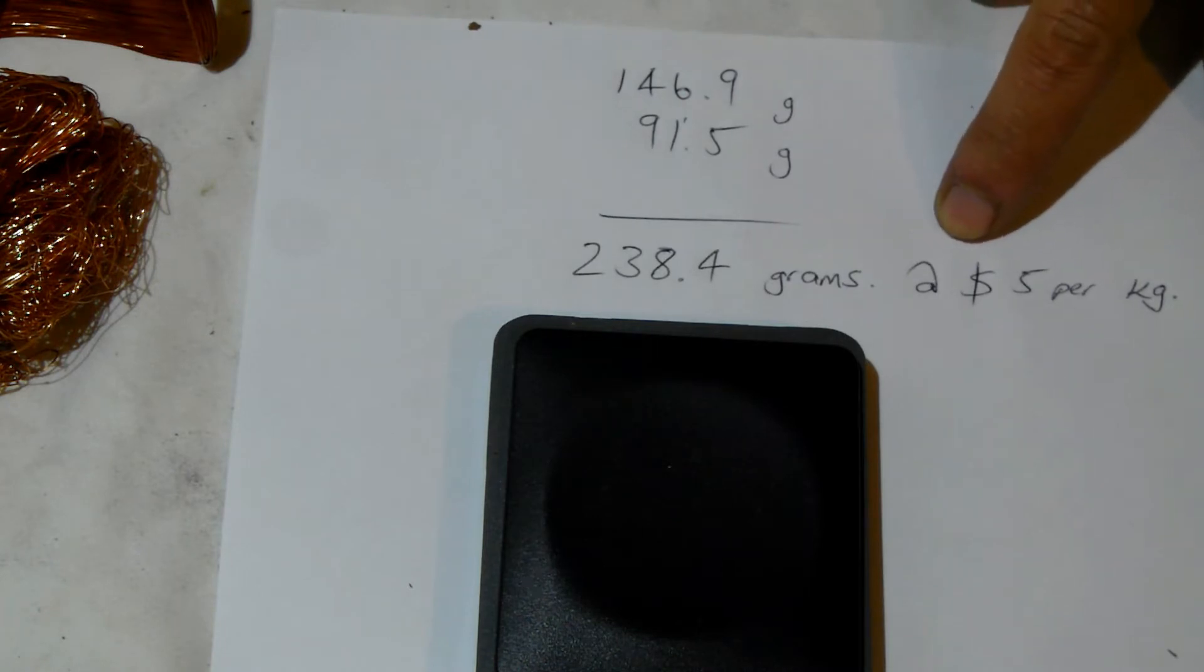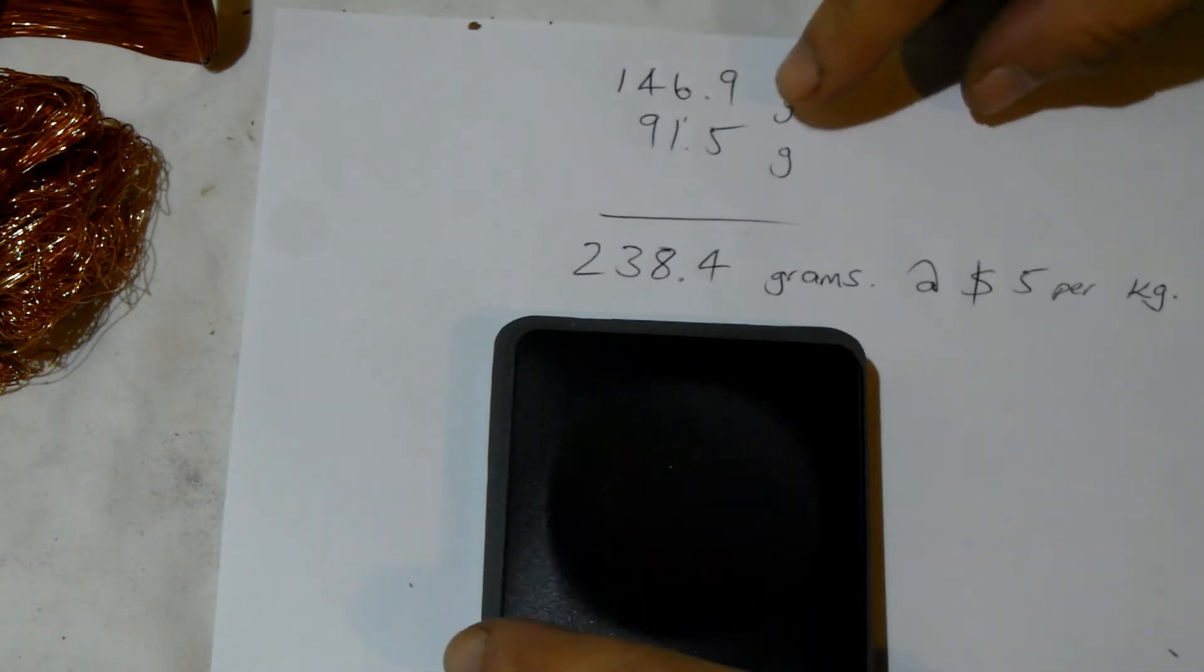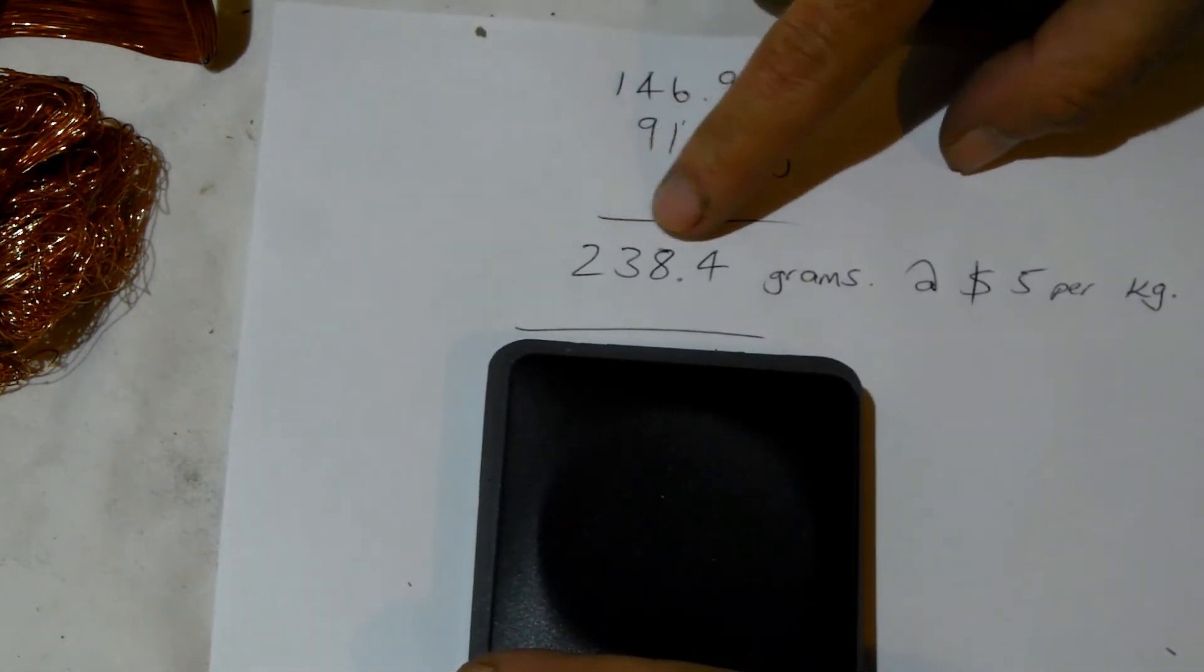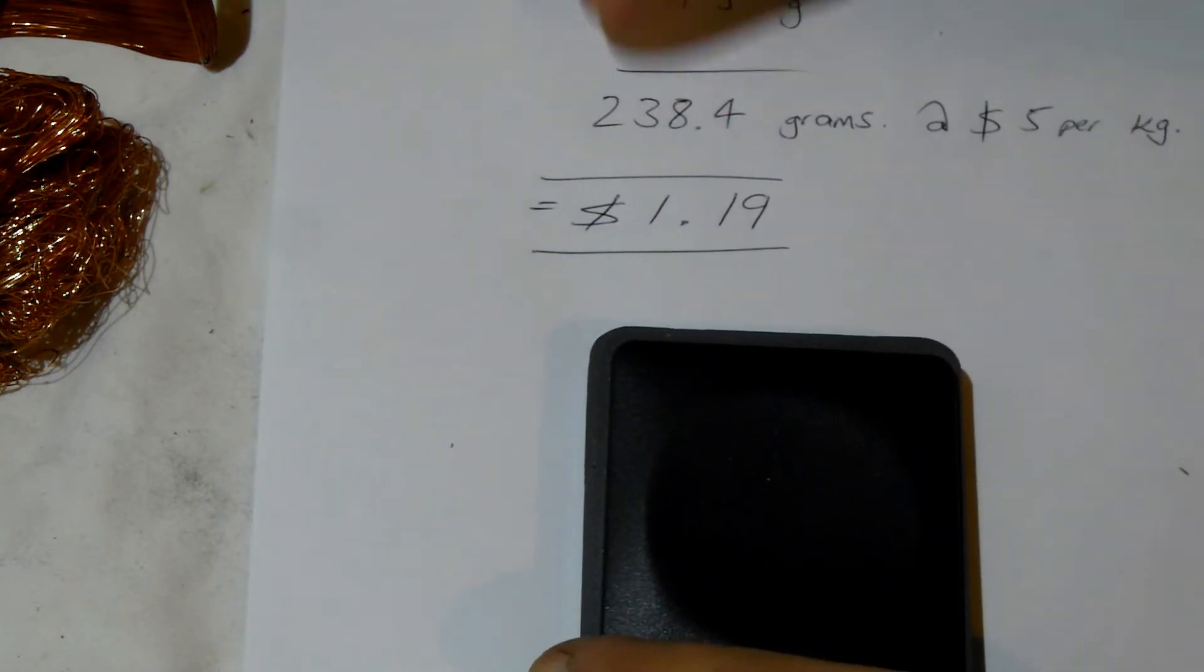Now I estimate that at about $5 per kilo, that was the best price I had on these so far. You can give or take according to where you are. So we've got a total of 238 grams at $5 per kilo.